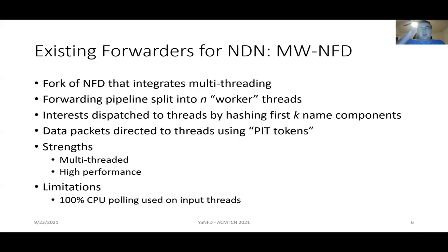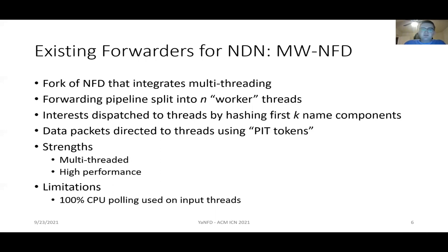There's also Multi-Worker NFD, or MWNFD, which is a fork of NFD that adds multi-threading. By splitting the pipeline into a series of worker threads, it chooses which thread handles which interest through the use of hashing — taking the first K components of the interest name, which is set at runtime, and hashing them to get the thread number. Data packets are directed back to the same thread the corresponding interest came on via PIT tokens. Its strengths are multi-threading and high performance, but it uses 100% CPU polling, resulting in high idle CPU utilization.